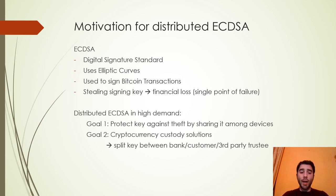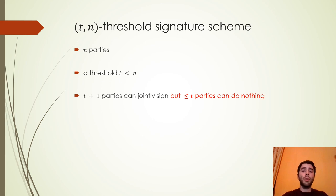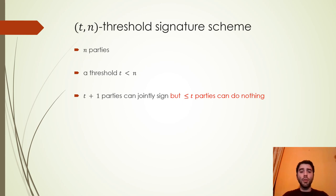If an adversary wants to steal the key, he has to obtain different pieces of that signing key. The second goal of distributed ECDSA is that it gives cryptocurrency custody solutions. In our context we will talk about T-out-of-N threshold signature schemes, where N is the number of parties, T is a threshold less than N, and T+1 is the minimum number of parties that can jointly sign, but T or fewer parties can do nothing and cannot obtain anything about the signature.